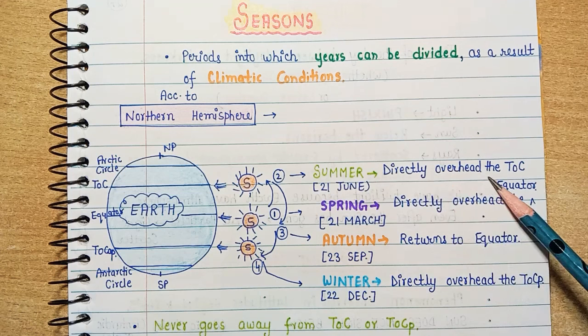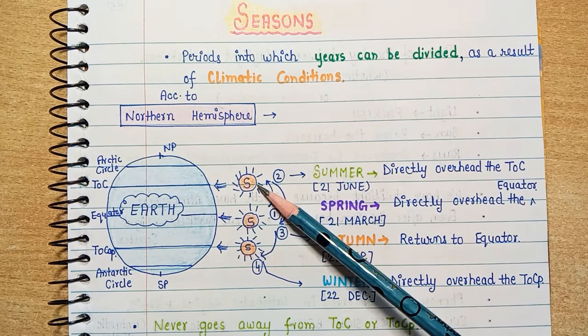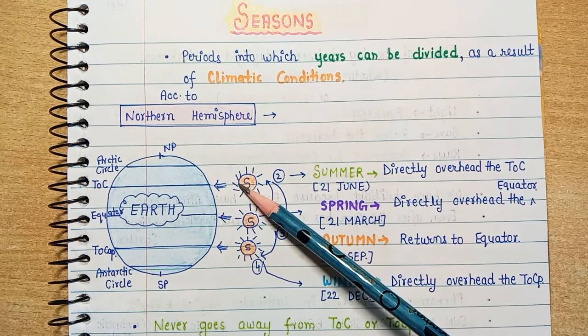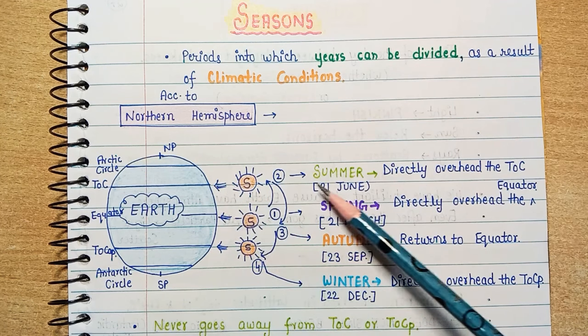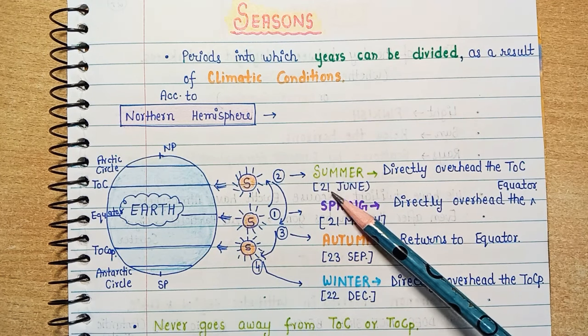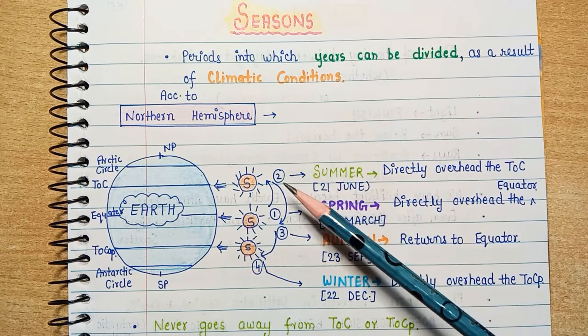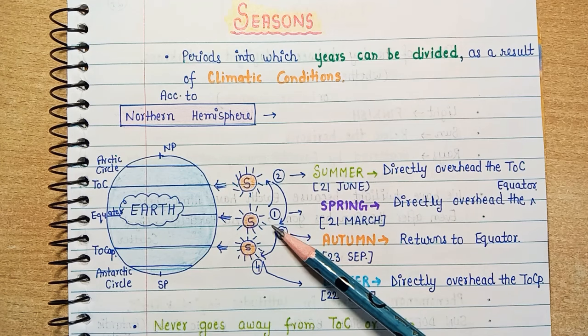What is at the Tropic of Cancer? Now here is why — summer has arrived. The sun has reached the Tropic of Cancer, and this happens around 21st June.